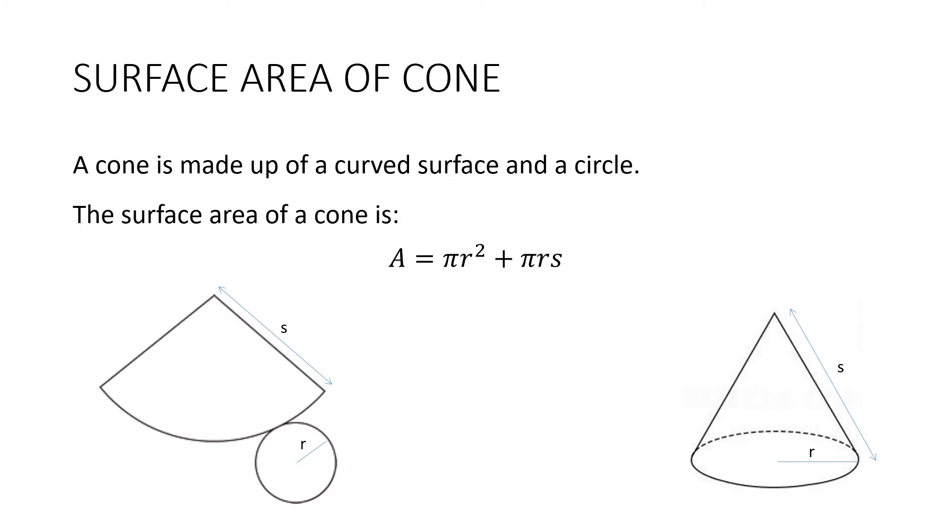Here's the formula. Let's have a look at it. This πr² is the area of the base circle and πrs is the area of the curved surface. Now, we do need to know the slant height for this formula. We learned about the slant height in the previous video when we were looking at pyramids. Remember, we quite often have to use Pythagoras' theorem to work out that slant height.